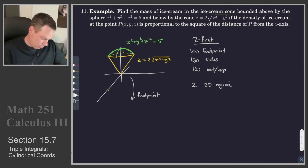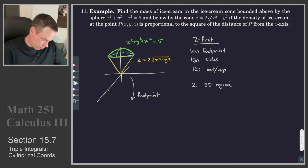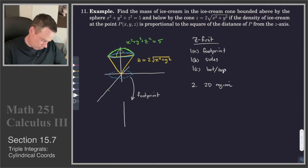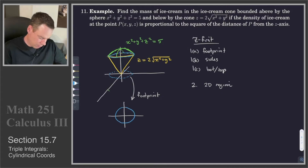Integrating z first means we're interested in the projection of this whole region down into the xy-plane. What's going to happen is it's going to be the region that the intersection curve projects down to. It looks like it's going to be a circle, so that's going to be our footprint. We'll have to figure out what that intersection is.